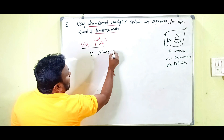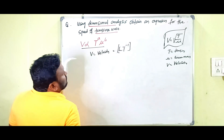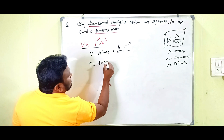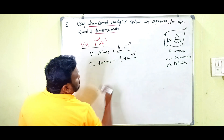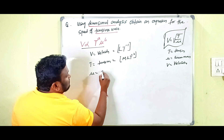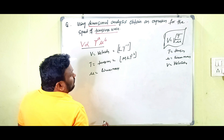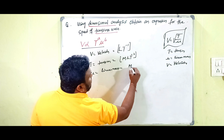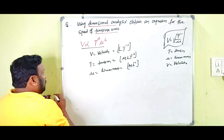The dimensional formula of v (velocity) is LT⁻¹. The dimensional formula of T (tension) is MLT⁻². And μ is linear mass density — mass per unit length — so its dimensional formula is ML⁻¹.